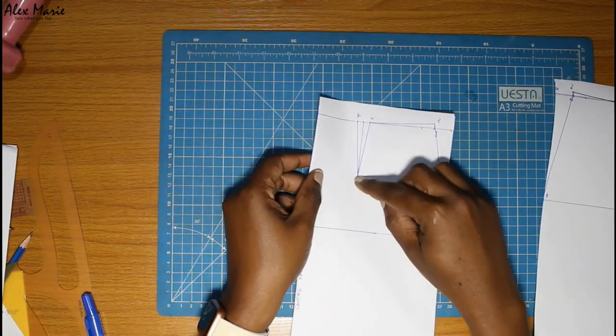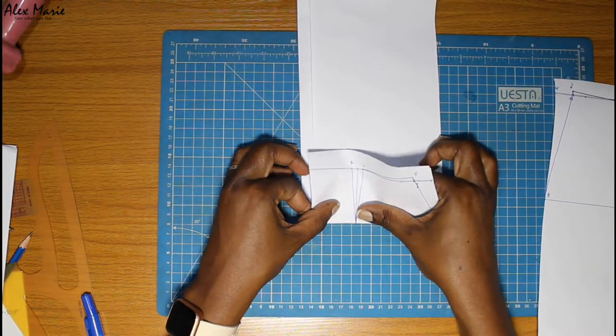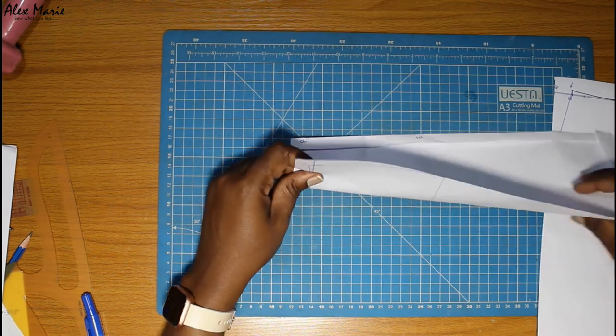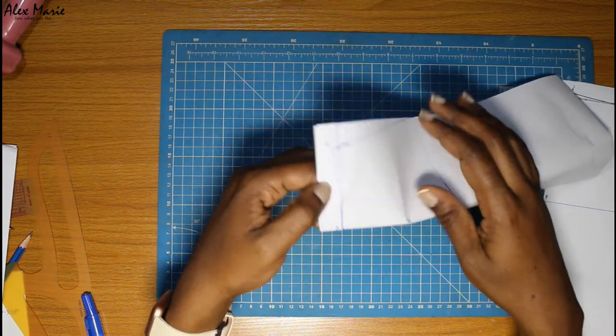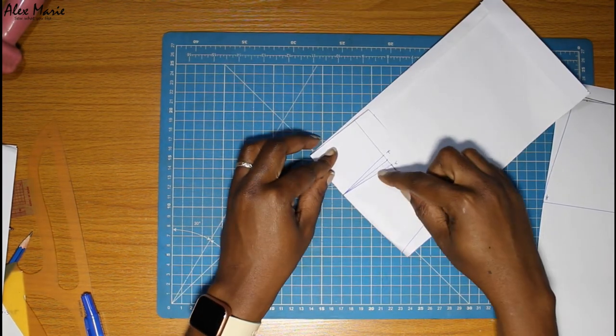So for the darts, we're basically just going to fold at the peak. Fold the dart leg on the side. This will just help us close the dart easily, so you see that.